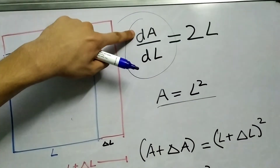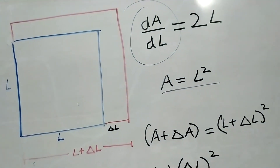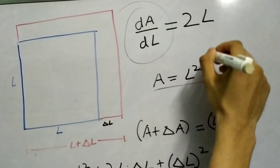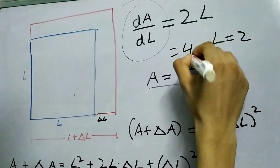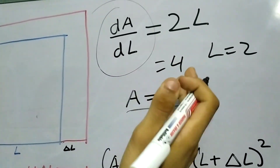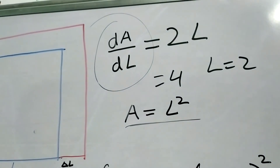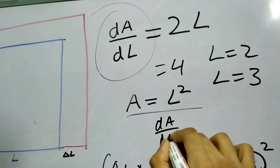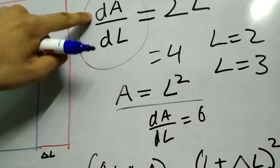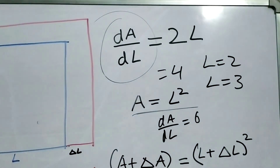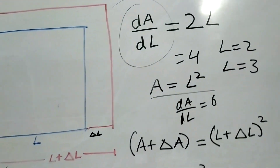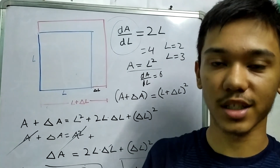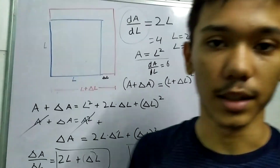How area changes with respect to length depends on your length — that is the key takeaway. For example, at l = 2 meters, dA/dl = 4 (in meters), and at l = 3, dA/dl = 6. So the rate at which area depends on l indeed depends on your length. In the next video I'll be dealing with functions like sine, cosine, and the exponential function, and seeing how their derivatives work. Thanks for watching.